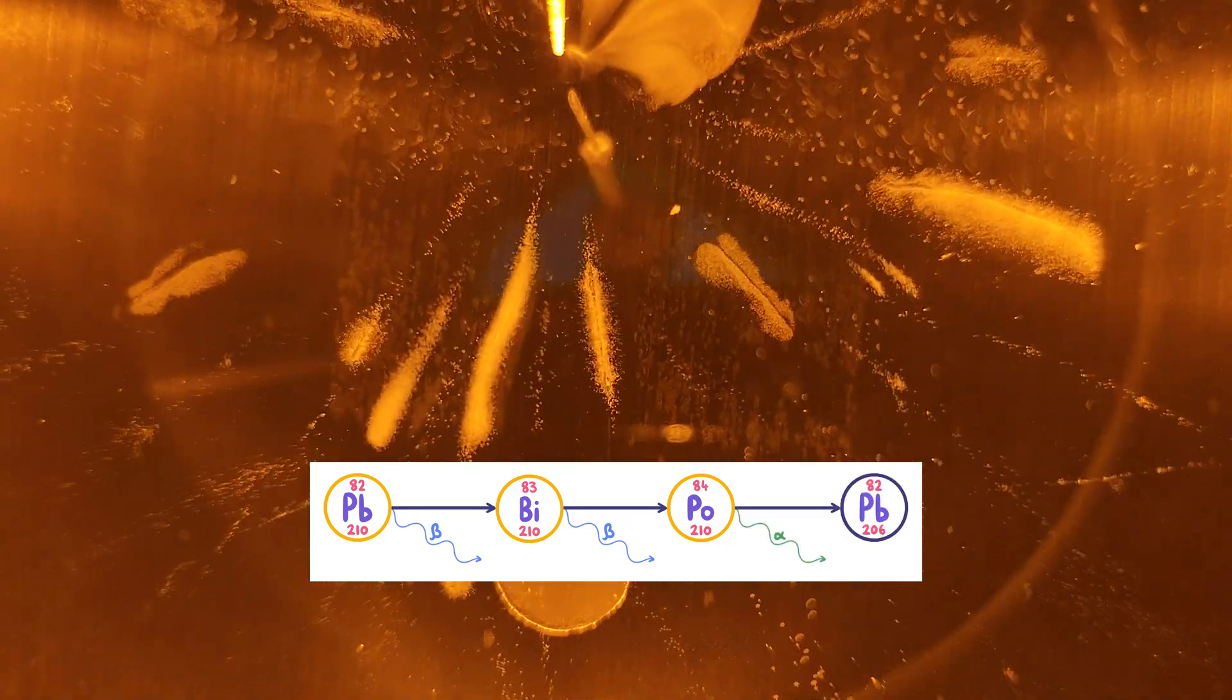Lead 210 beta decays into bismuth 210, which beta decays into polonium 210, which alpha decays into stable lead 206, ending the decay chain. As a result, we observe thick tracks left by alpha radiation and thinner tracks left by beta radiation.